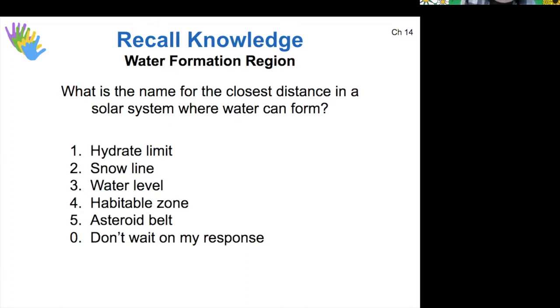I see quite a few votes for habitable zone, and it's true that that is generally defined as the area where liquid water is able to form in the solar system. But the closest distance in the solar system where water can condense out of the solar nebula is the distance where water would be ice. And so for that reason, this is called the snow line. It's farther away than the habitable zone.